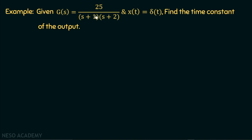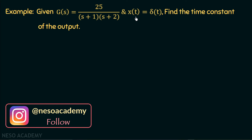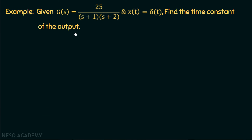Given G(S) equal to 25 over (s+1) multiplied with (s+2), and x(t) equal to δ(t) — the impulse function. Find the time constant of the output. So in this example, we are given a system whose transfer function G(S) is 25 over (s+1)(s+2), and the input x(t) is equal to δ(t). We need to find out the time constant of the output.